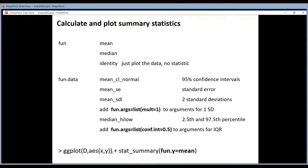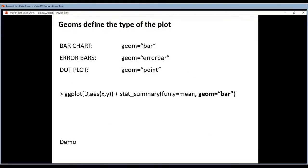Concretely, you have your ggplot function, do a plus, add your stat_summary function and say fun is equal to mean. Note: it used to be fun.y but the name was changed to fun. Then you have the geom argument, which is also compulsory. The values it takes are: bar to produce a bar chart, errorbar to produce error bars, or point to produce a dot plot. Inside the stat_summary function you define geom equal to bar.